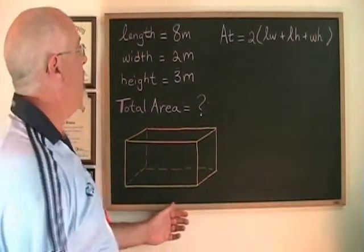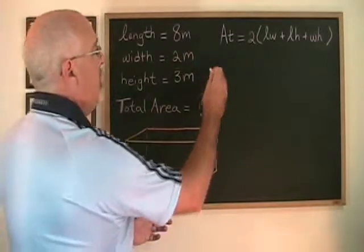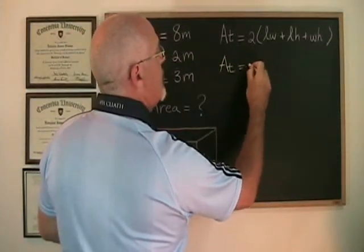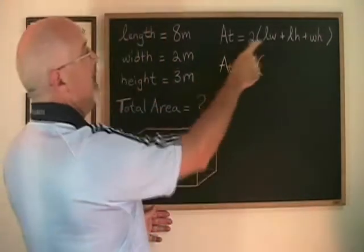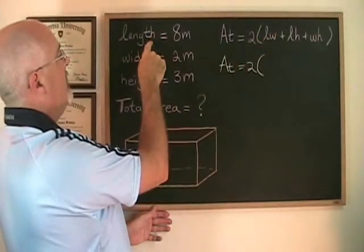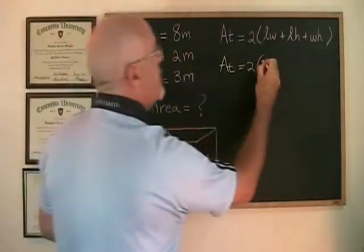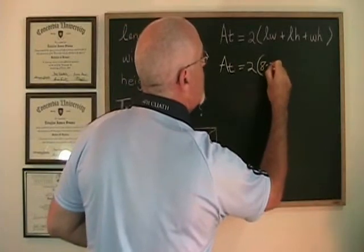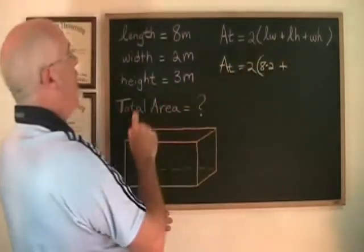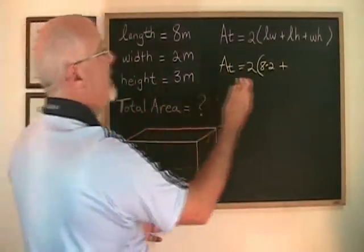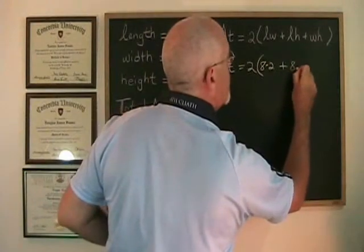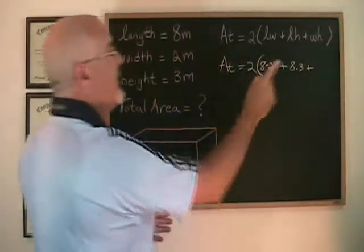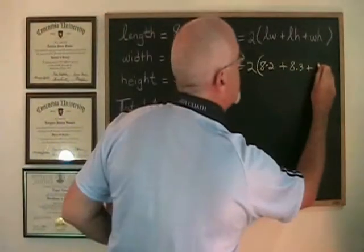If I start plugging in these values, I get area total equals 2 times: L times W, which is 8 times 2, plus L times H, which is 8 times 3, plus W times H, which is 2 times 3.